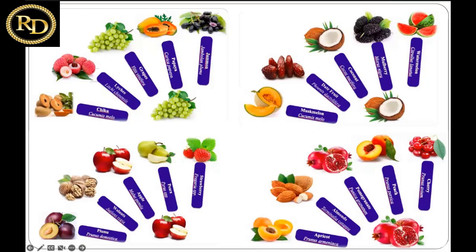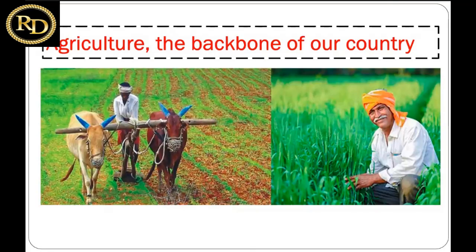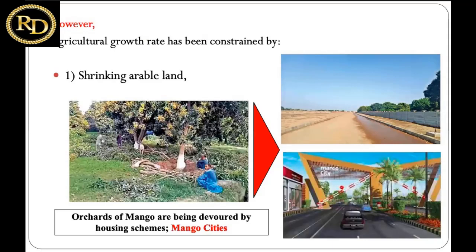Agriculture is considered the backbone of the country, however it is being affected by several constraints. Most importantly, the shrinking of arable lands is a big challenge. Many fertile, cultivable lands are being converted into urban areas and different housing schemes. Even mango orchards are being devoured by housing schemes, with mango trees being removed rather than orchards being maintained.